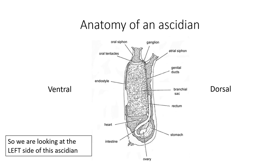We are right now looking at the left side of this Ascidian. If you think of dorsal on your own body as being your back and ventral as being your stomach, what we're looking at now is the left side of the Ascidian, because the back is on the dorsal side and the stomach is on the ventral side. So again, this is the left side of the animal.